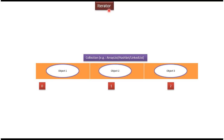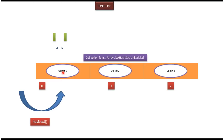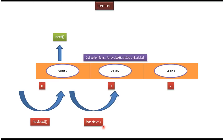Iterator has a hasNext method — it will return true if the collection has more elements. Using the next method we can get the particular object. So using next method we can get object one. Once we get object one, if you want to get object two, then again we call hasNext, it returns true, and using next we get object two.